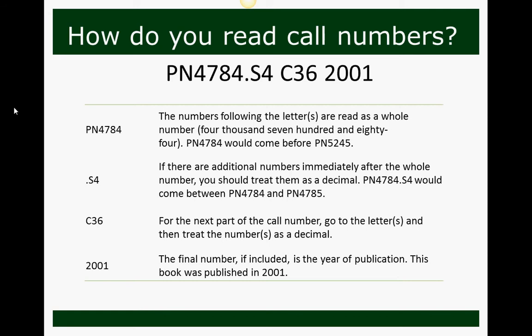To read call numbers, the numbers following the letters are read as a whole number — so we have PN 4784. PN 4784 would come before PN 5245. If there are additional numbers immediately after the whole number, treat them as a decimal, so PN 4784.S4 would come between PN 4784 and PN 4785. For the next part, take the letter and treat the number that follows as a decimal — so C36. The final number is the year of publication, 2001. So this call number is read: PN 4784.S4 C36 2001.